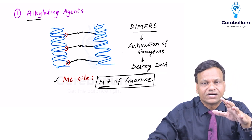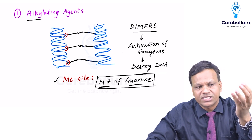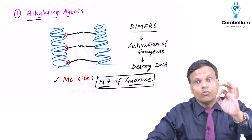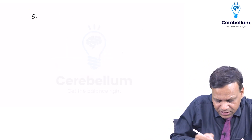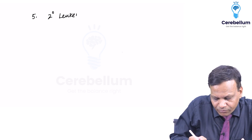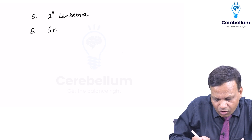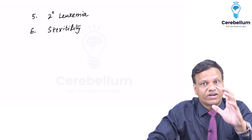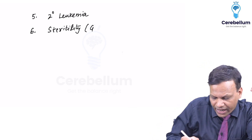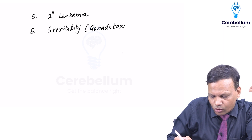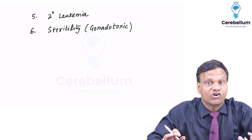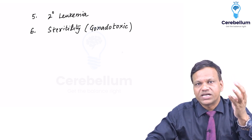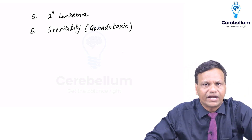Like all anti-cancer drugs, alkylating agents have four common side effects: bone marrow suppression, alopecia, diarrhea, and hyperuricemia, apart from vomiting. Alkylating agents as a group have two additional side effects: number five is they can cause secondary leukemia, and number six is they can cause sterility or permanent infertility — they affect the gonads. So if a question asks which drug is gonadotoxic, the answer is alkylating agents. Alkylating agents therefore have six side effects in total.